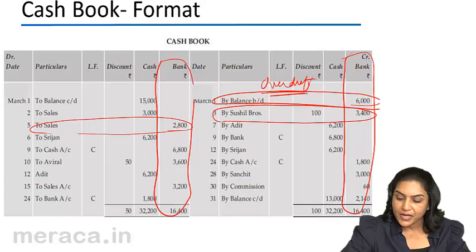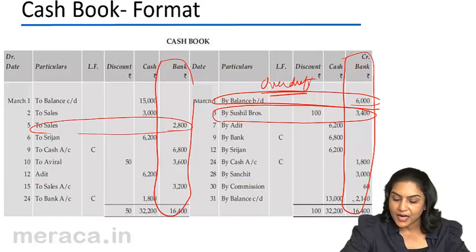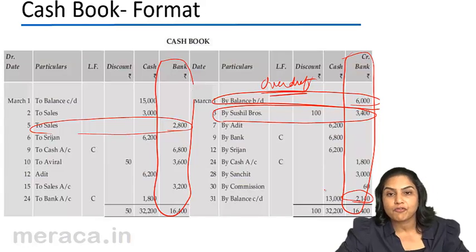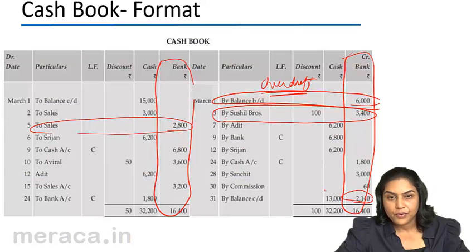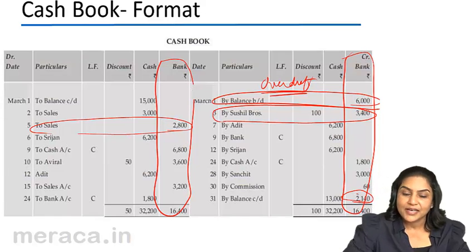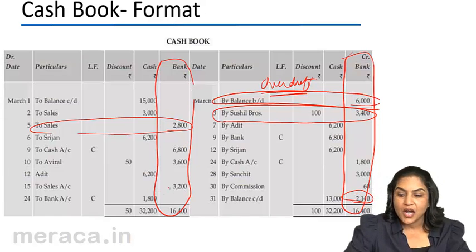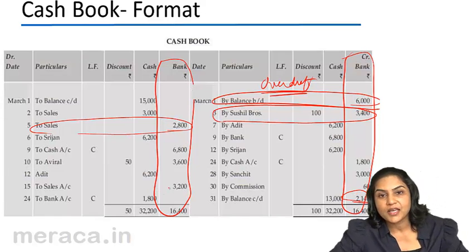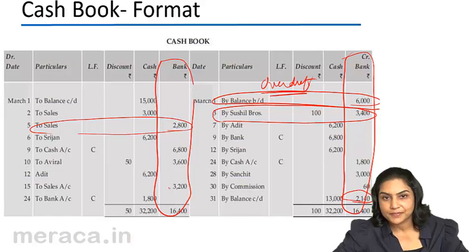However, in the closing balance, if you notice, the bank account has a debit balance of 2140, indicating a favorable balance, since deposits are more than the withdrawals.